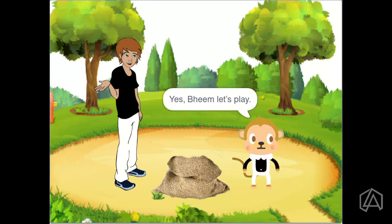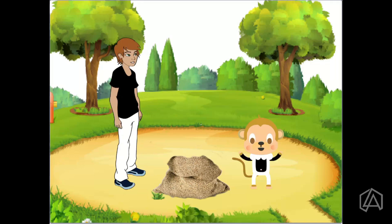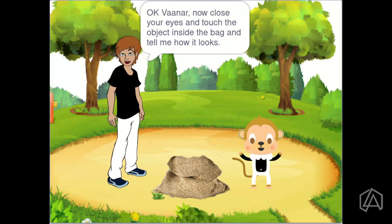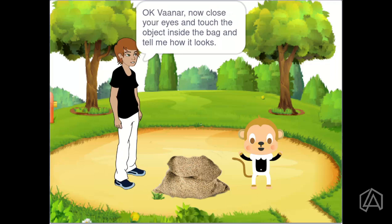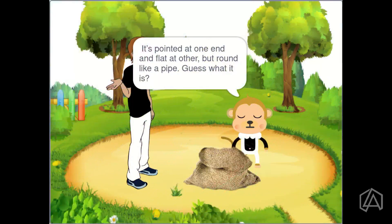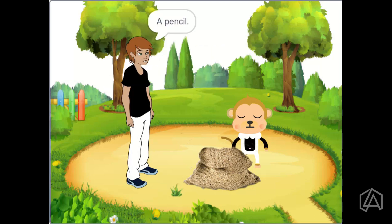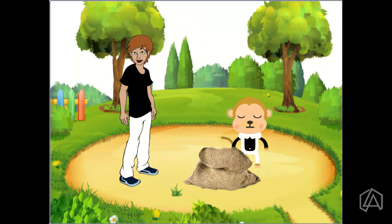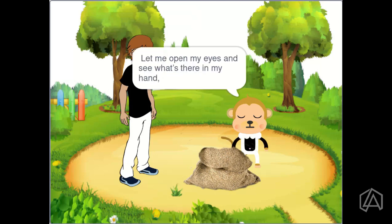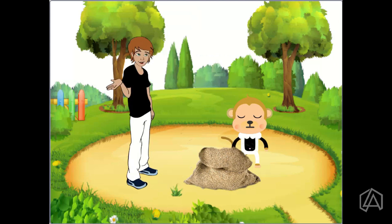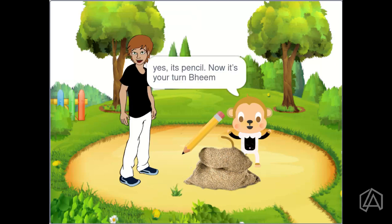Yes Beam, let's play. Okay Wana, now close your eyes and touch the object inside the bag. And tell me how it looks. It's pointed at one end and flat at the other but round like a pie. Guess what it is? A pencil. Let me open my eyes and see. Yes, it's a pencil.